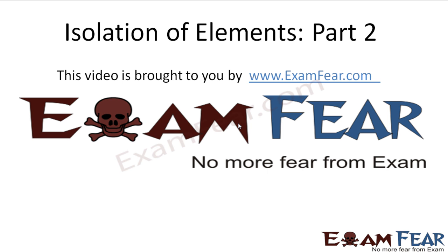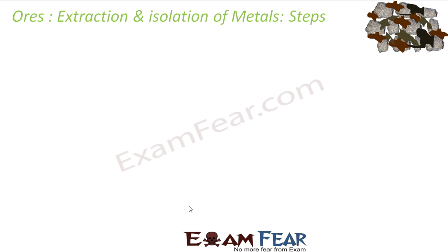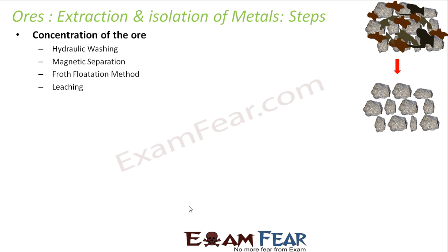Hello friends, this video on isolation of elements part 2 is brought to you by examfier.com. For typical ore extraction, these are the steps involved. The first step is the concentration of ore — here we remove the unwanted particles. There is no chemical process involved; it's more of a physical process.